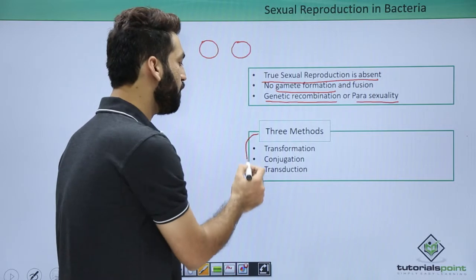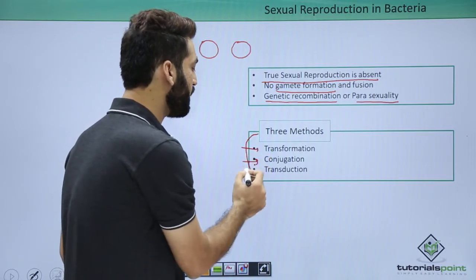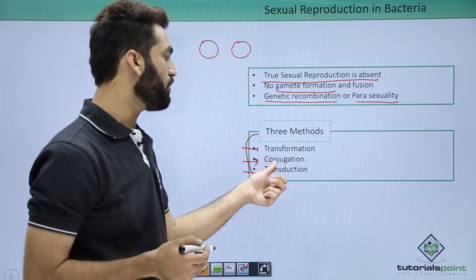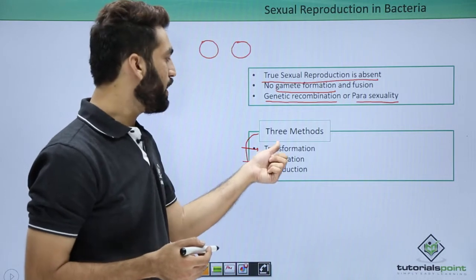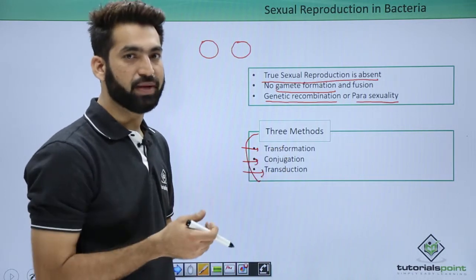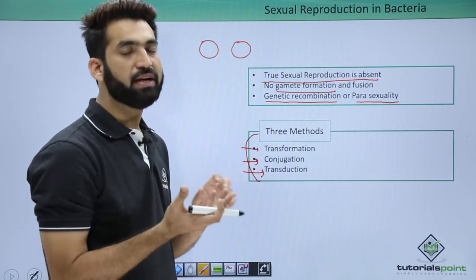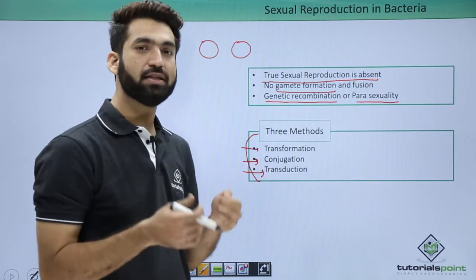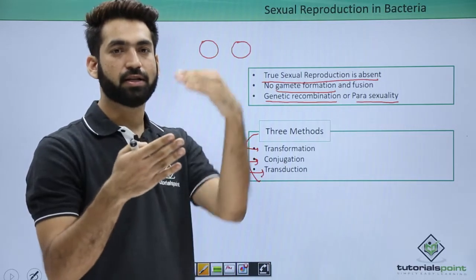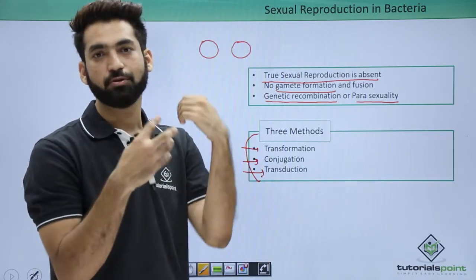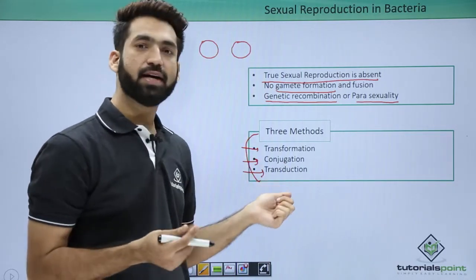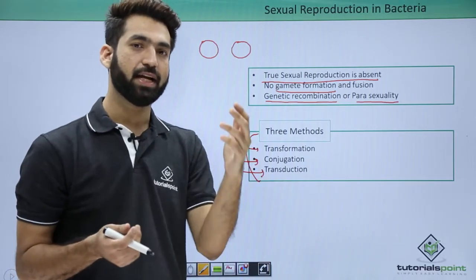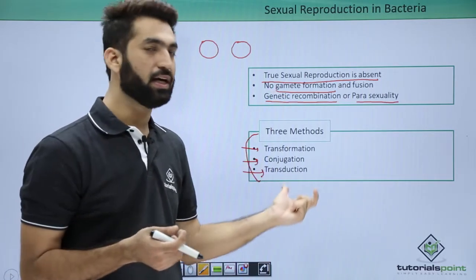There are three methods seen in bacteria for sexual reproduction: transformation, conjugation, and transduction. In transformation, the bacteria will not meet but will exchange their genetic material. In conjugation, the bacteria will meet and form the conjugation tube, and DNA will pass from one bacteria to another. Transduction is transfer of DNA from one bacteria to another with the help of a virus called bacteriophage.